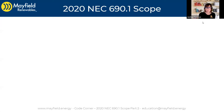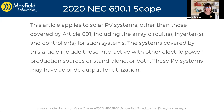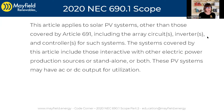We'll jump back in and read that scope one more time briefly. Article 690 applies to solar PV systems other than those covered by Article 691, which are five megawatt systems and above, including the array circuits, inverters, and controllers for such systems. The systems covered by this article include those interactive with other electric power production sources, or standalone, or both.